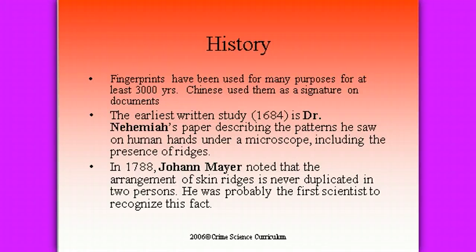The earliest written study of fingerprints was done in 1684 — that was Dr. Nehemiah's paper. He described the patterns that he saw on humans' hands underneath the microscope, including the presence of what we now call ridges. In 1788, Johann Mayer noticed that the arrangement of the skin ridges is never duplicated in two persons, so he's probably the first scientist that actually recognized this fact.